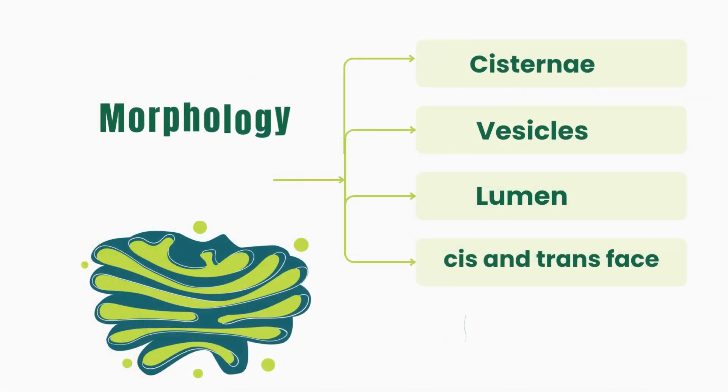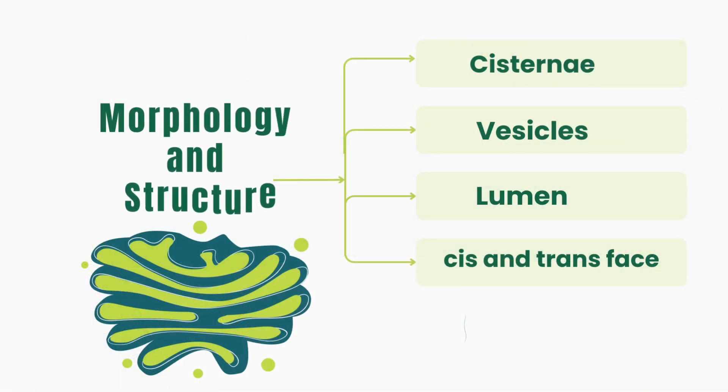The structure of the Golgi apparatus consists of cisternae, vesicles, lumen, cis face, and trans face.